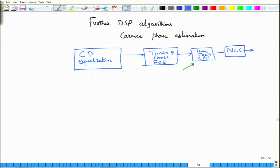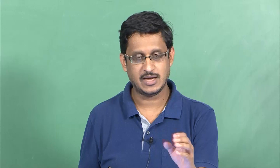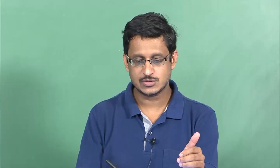CD equalization is usually adaptive. The total number of taps are split into two parts: one large tap fixed FIR filter, and then a small tap adaptive FIR filter. Using adaptive techniques allows us to converge these algorithms and track the changes in the channel, which results in CD effects changing with respect to time — not very fast as in wireless communication, but it does change. You can use this adaptive filter to compensate for the complete chromatic dispersion.